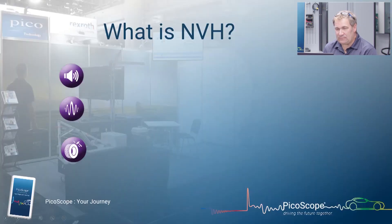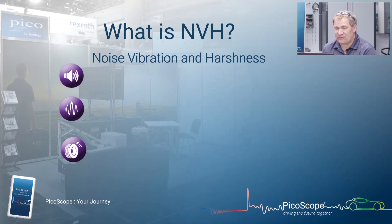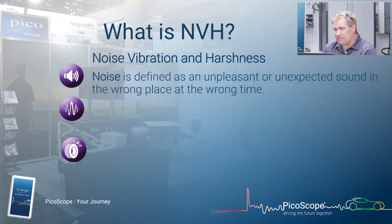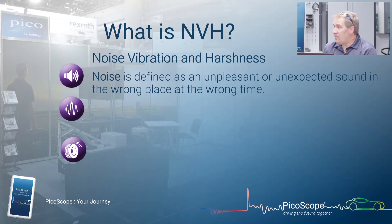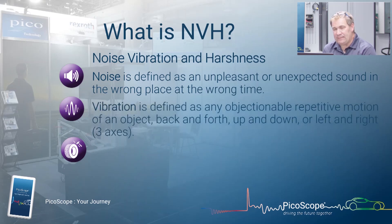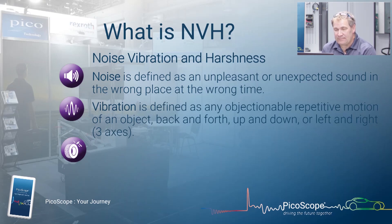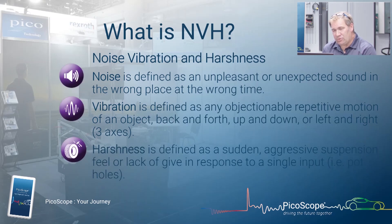What is NVH? As I said, it's noise, vibration and harshness testing. There are three things to think about. Noise is defined as an unpleasant or unexpected sound in the wrong place at the wrong time. Vibration is defined as an objectionable repetitive motion — either an up or down, back or forth movement that you can feel. And harshness — possibly the harder one to understand — is defined as an aggressive movement from a single input.